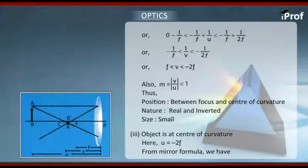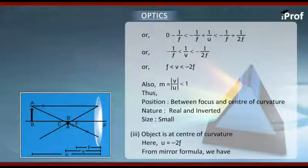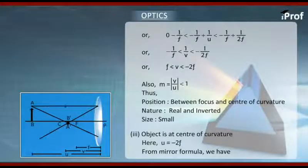Now we can again analyze the whole situation and we can report the image is formed between center of curvature and focus. The size of image is small compared to the size of object. And it is very clear from the figure that image is inverted with respect to object.